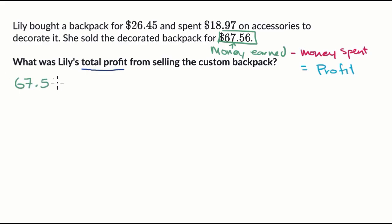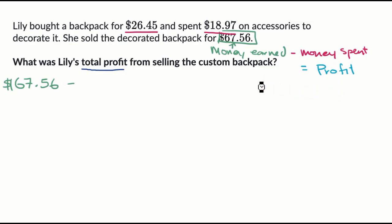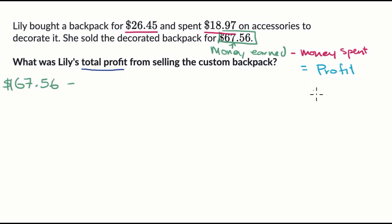So we have $67.56 and then we're going to subtract the money spent. She spent money twice: she bought a backpack for $26.45, and then spent another $18.97 on accessories to decorate it. So the total money spent is $26.45 plus $18.97.